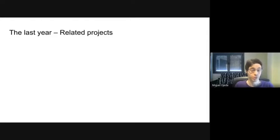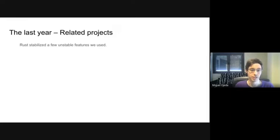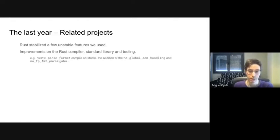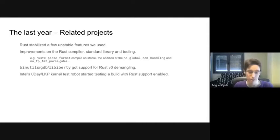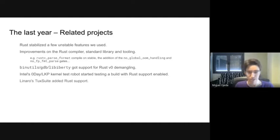On the broader ecosystem: Rust stabilized some features we were using, and we got improvements in the upstream Rust compiler, standard library, and tooling. There is now support in the ecosystem for the new Rust demangling system. The kernel test robot from Intel has started running with Rust enabled, which is great — we thank them for that. Linaro also added Rust support.